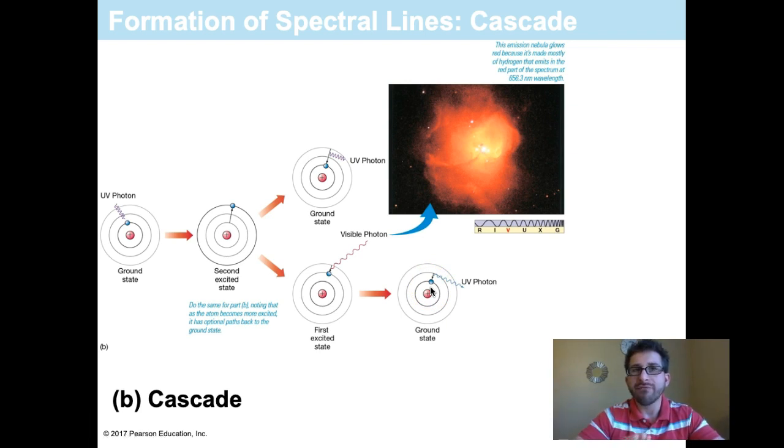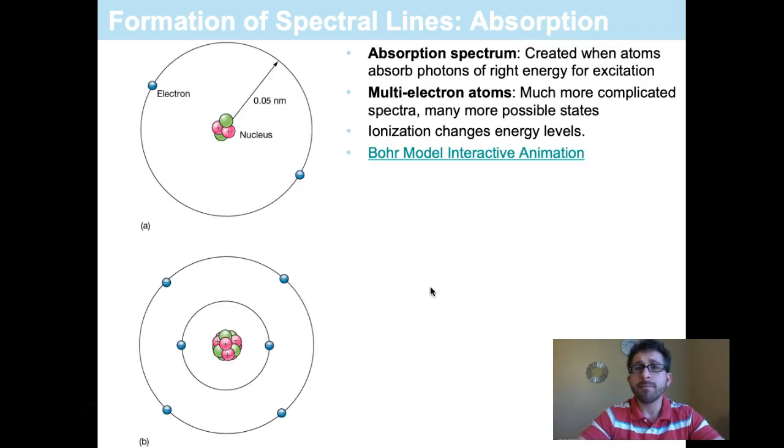So we have these two main ways in which spectral lines are formed. And both of these can be simulated on the Bohr model interactive animation that I'm going to put in the links below. Please check this thing out. It's a really helpful tool, and I think you'll really enjoy playing around with it.